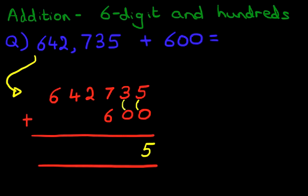Tens column, three plus zero. Three. Hundreds column, we have seven plus six. What is seven plus six? That's right, it is thirteen. So we put one here and three over here.